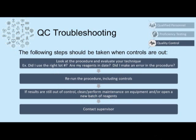When control values fall outside of range, the following steps can be taken to troubleshoot what is wrong with the controls. The first step should be to look at the procedure and evaluate your technique — are you over-pipetting or under-pipetting, or using the wrong reagent? The next step would be to rerun the procedure, including the controls, to see if it works a second time — maybe it was just an operator issue. If the results are still out of control, clean the instrument or possibly perform maintenance on the equipment, followed by opening up a new batch of reagents. If the controls still aren't coming in range after performing maintenance, cleaning your procedure, reevaluating your technique, and possibly opening up new reagents, the next step would be to contact your supervisor.